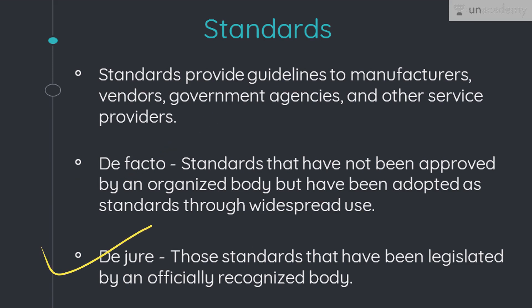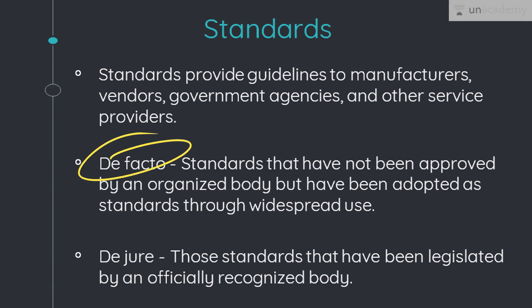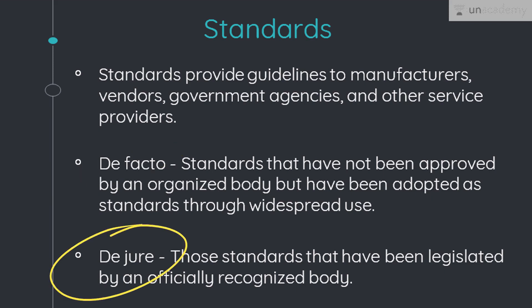De facto means 'by fact or by convention' and de jure means 'by law or by regulation.' De facto standards are those that have not been approved by an organized body but have been adopted as standards through widespread use. They are often established originally by manufacturers who wish to define the functionality of a new product or technology. De jure standards are those that have been legislated by an officially recognized body. For example, the QWERTY keyboard layout is a de facto standard — it is not officially recognized by anybody, but it is widely accepted.